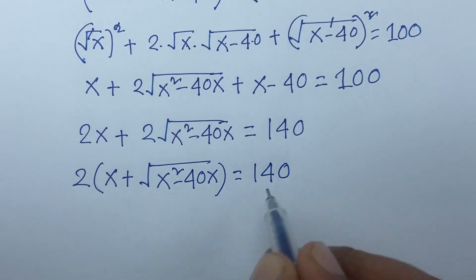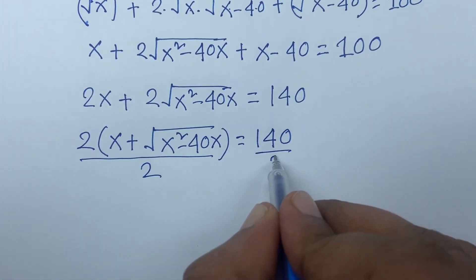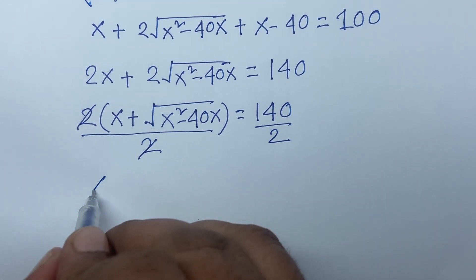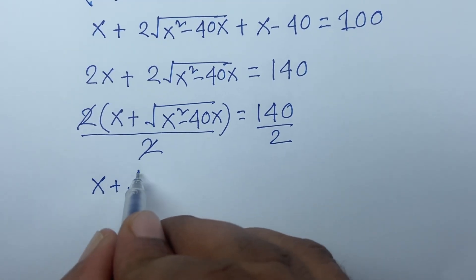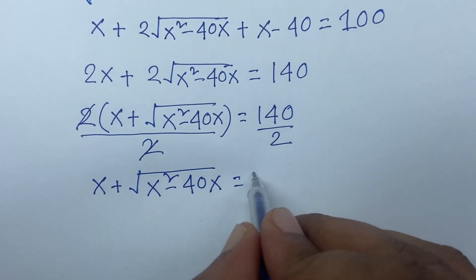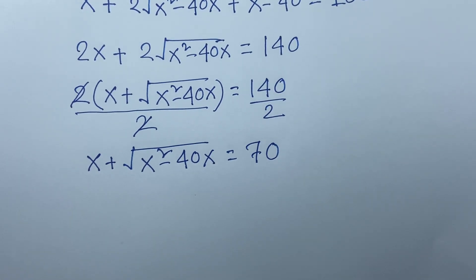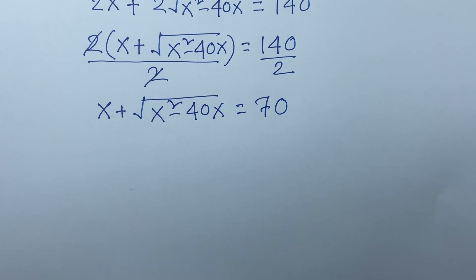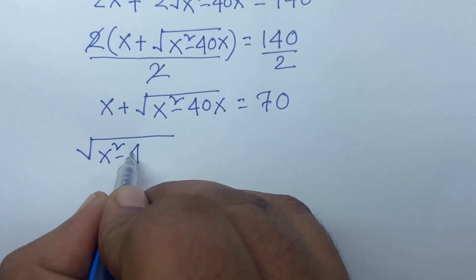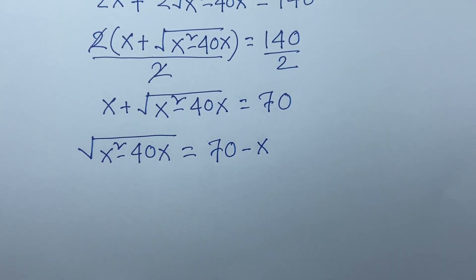The 2s cancel, giving us x plus square root of x squared minus 40x equals 70, because 140 divided by 2 is 70. Rearranging, square root of x squared minus 40x equals 70 minus x.